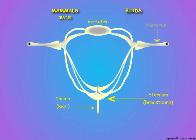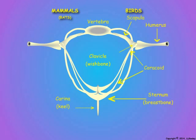The humerus bone of the wing articulates at a joint with the clavicle, the coracoid bone, and the scapula or shoulder blade, which in birds is attached solidly to the vertebrae and is immovable.